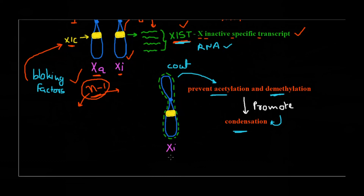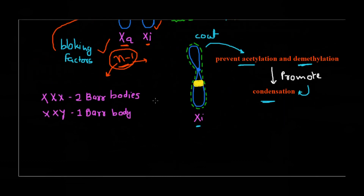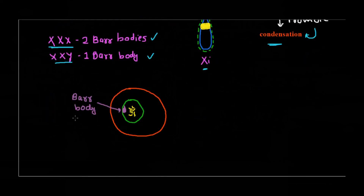That's how the inactive state of the X chromosome is maintained — because of XIST preventing acetylation and demethylation, histone remodeling doesn't happen, decondensation doesn't occur, and the chromosome remains in a highly compact condensed structure unavailable for transcription. By the N minus one rule, only one X chromosome remains active. In rare cases — for example, if a female has three X chromosomes, you would find two Barr bodies in the nucleus; in Klinefelter syndrome (XXY male), you would find one Barr body.